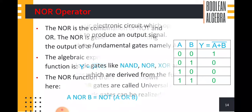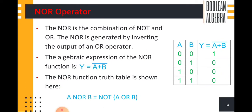Now the NOR operator: NOR operator is the complement of OR operator. NOR is the combination of NOT and OR. The NOR is generated by inverting the output of an OR operator — we get the output of NOR by inverting the output of OR. The algebraic expression of the NOR function is Y equal to A plus B, the complement — written as A plus B overbar.